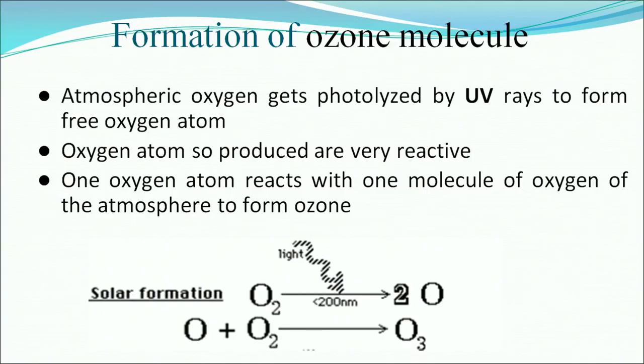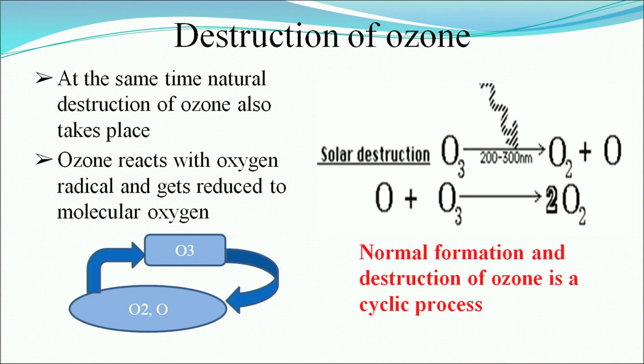Ozone is naturally both formed and destroyed in our atmosphere. Atmospheric oxygen gets photolyzed by UV rays to form free oxygen atoms, which are very reactive. One oxygen atom reacts with one molecule of atmospheric oxygen to form ozone (O3). At the same time, natural destruction of ozone also takes place — ozone reacts with oxygen radicals and gets reduced to molecular oxygen. So the O3 and O2 cycles are continuously taking place in our atmosphere.